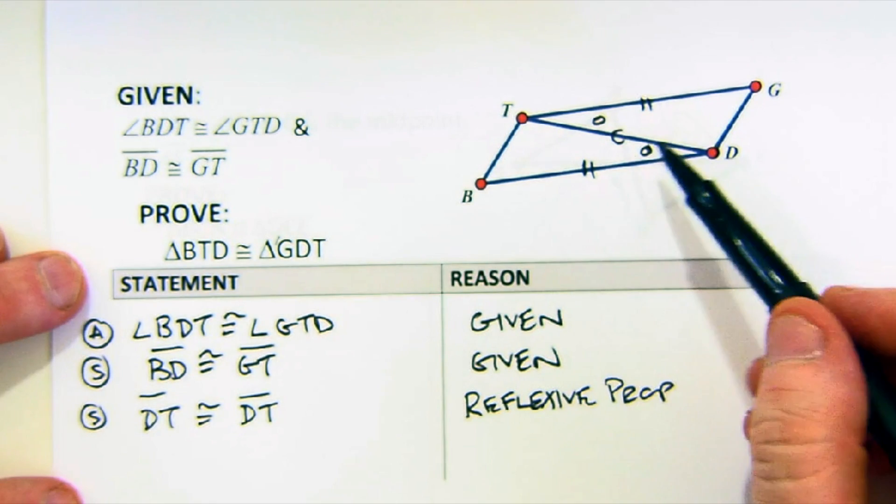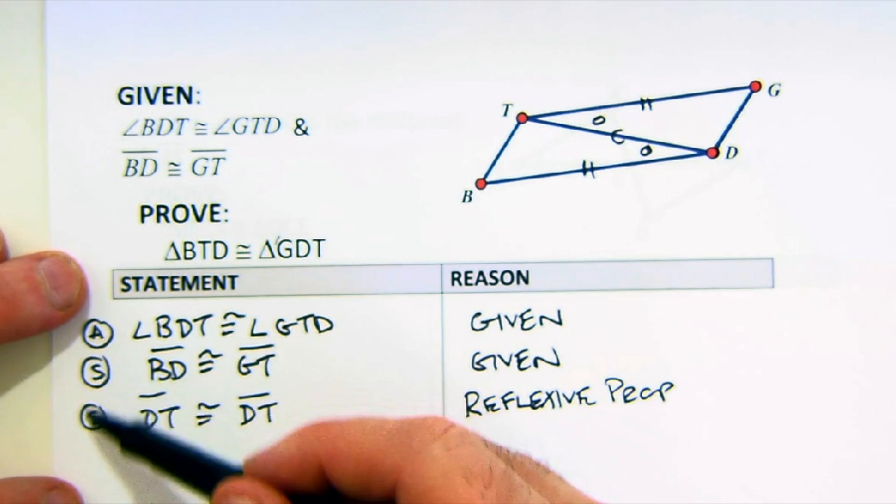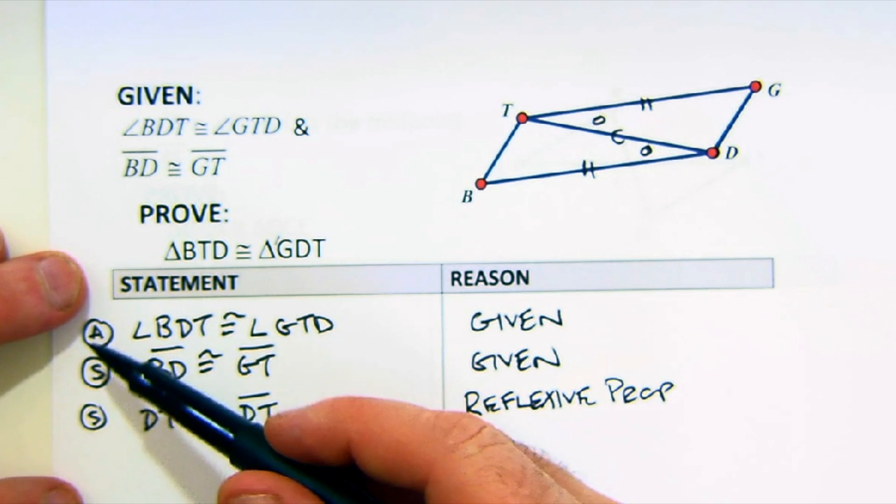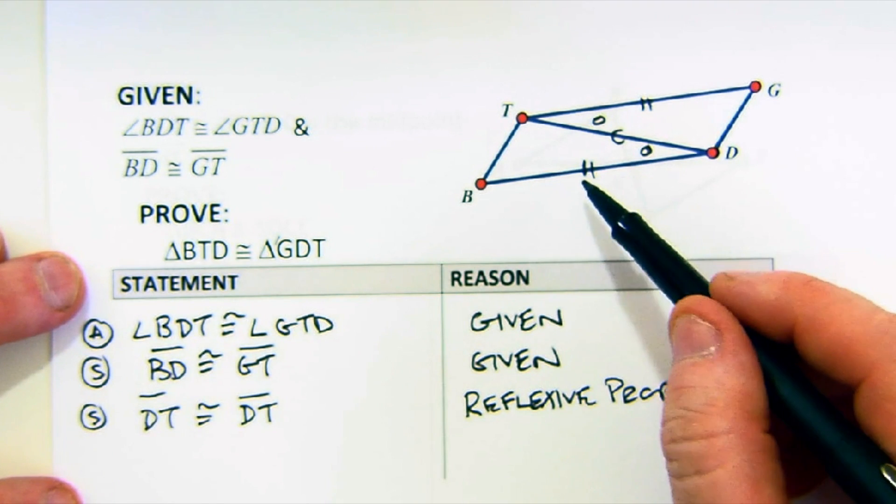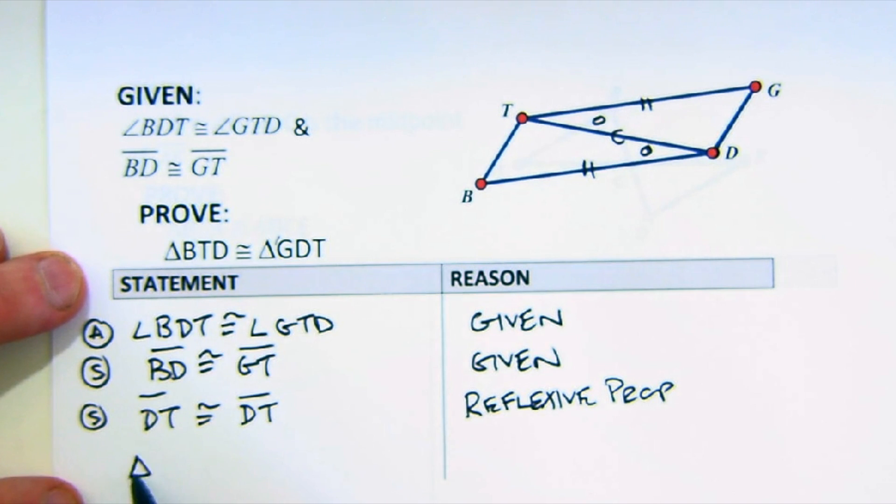Now that we've got two angles and a side, now the order we listed them here, it looks like angle, side, side. But here, notice it goes side, angle, side. So I'm going to state that triangle BTD is congruent to triangle GDT, and I'm going to use side, angle, side. Very nice, simple proof, and obtain the goal. Let's try another one.